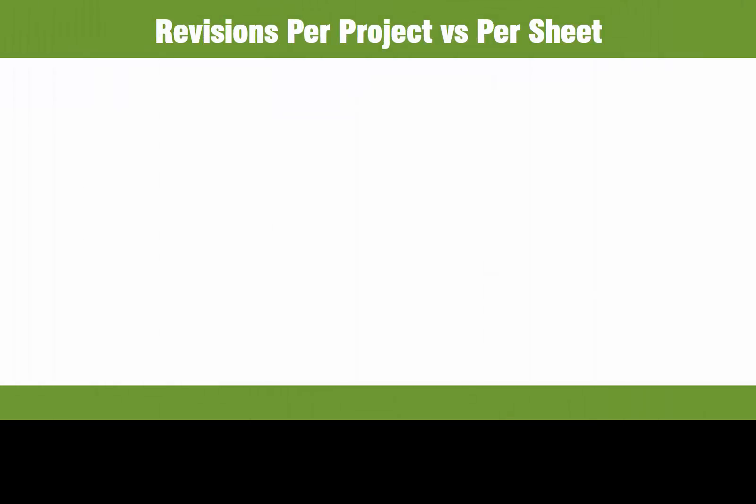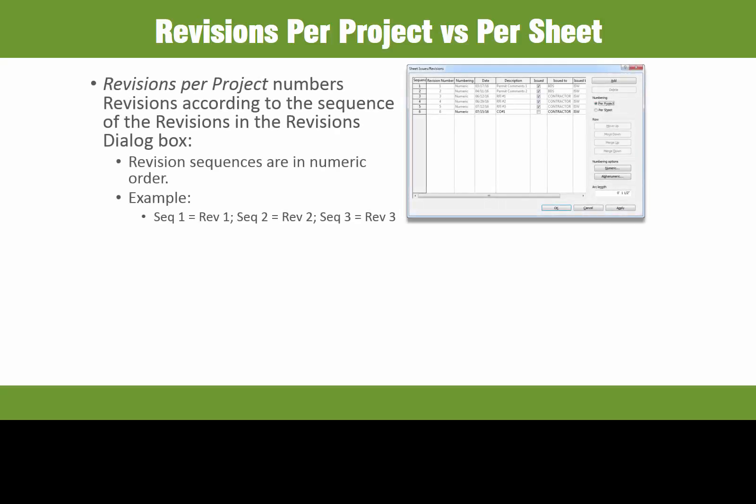Revisions can be set up on a per project basis or per sheet basis. Revisions per project numbers revisions according to the sequence in the revisions dialog box. By default, if the numbering is set to numeric, then the sequence and revision number will match — sequence 1 will equal revision 1, sequence 2 will equal revision 2, and so forth.